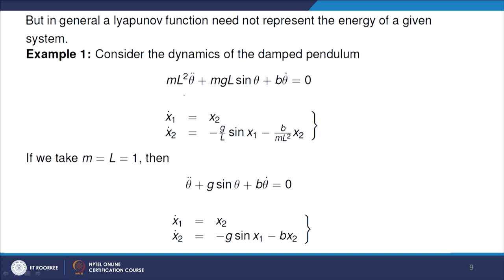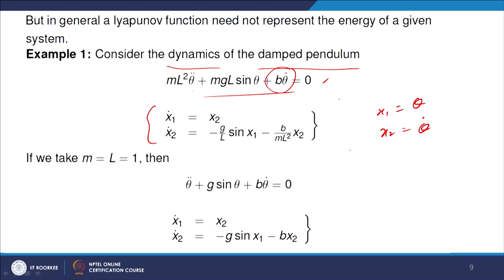Consider the damped pendulum: ml²·θ̈ + mgl·sin θ + b·θ̇ = 0, where the damping term b·θ̇ accounts for air friction. Converting to first-order form with x₁ = θ, x₂ = θ̇, we get ẋ₁ = x₂ and ẋ₂ given accordingly. Setting the right-hand side to zero gives (0, 0) as an equilibrium point.